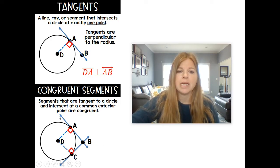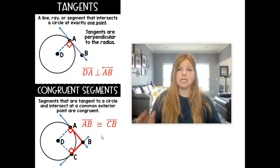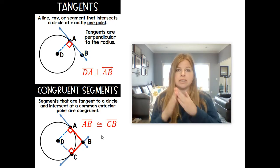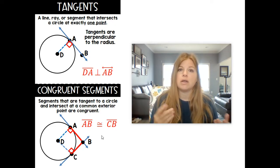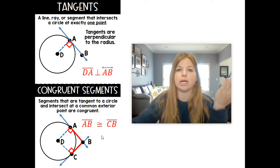And they are connecting or intersecting at this point B. Now if I tell you that these two lines are tangents, line AB and line BC, then the segments that are created, A to B and B to C, those are congruent to each other. So segment AB is congruent to segment CB. So anytime you have two tangents intersecting on the outside of a circle, those two segments that are created are actually going to be congruent to each other.